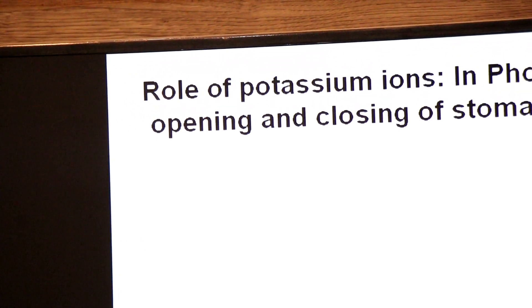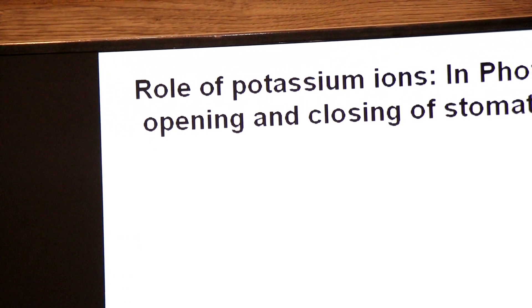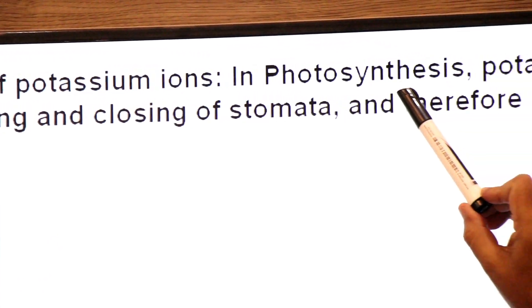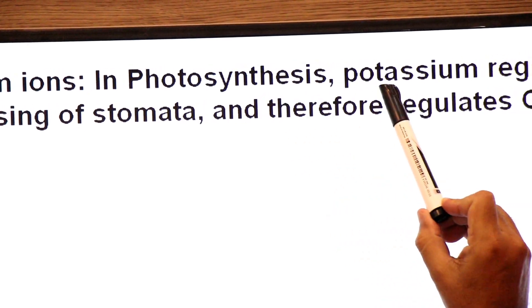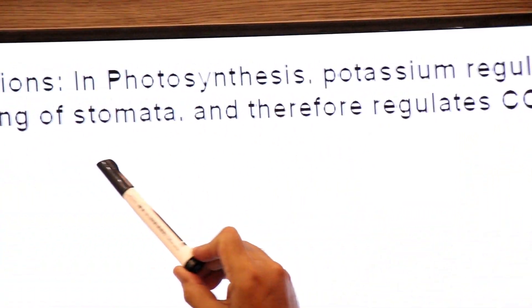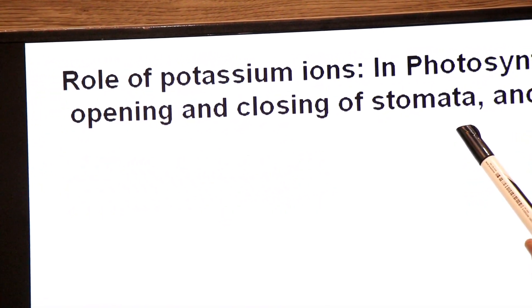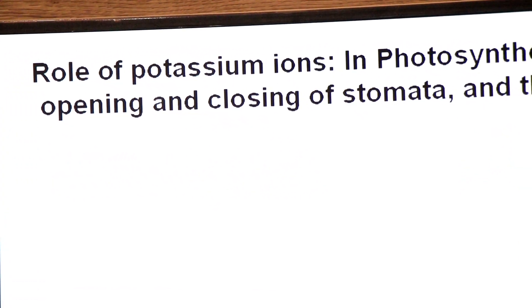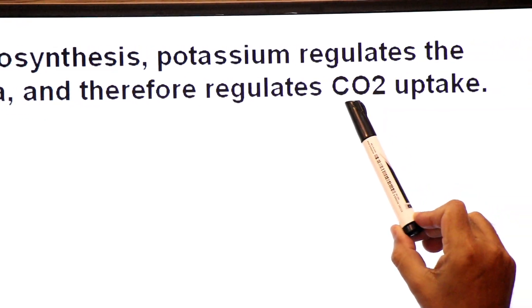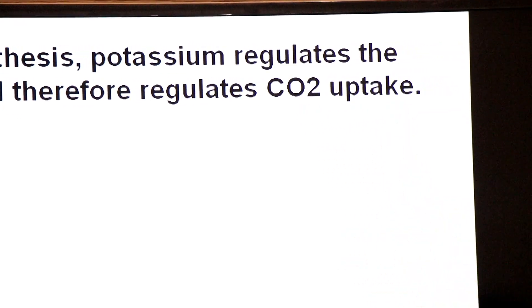Now, dear students, we will discuss the role of potassium ions in photosynthesis. Potassium ions regulate the opening and closing of stomata, and therefore regulate the uptake of carbon dioxide by the plant.